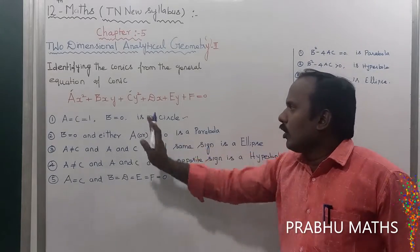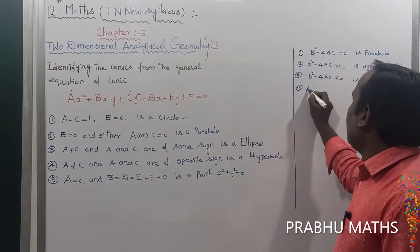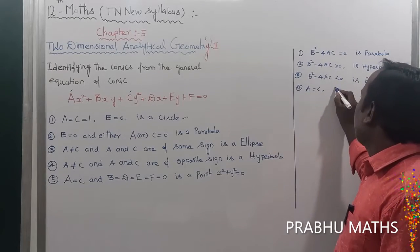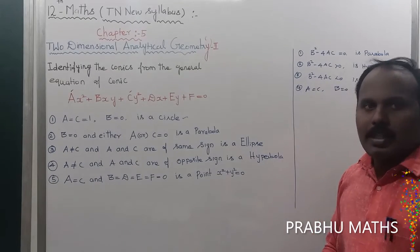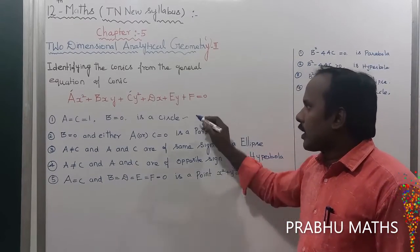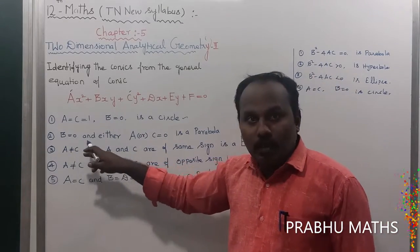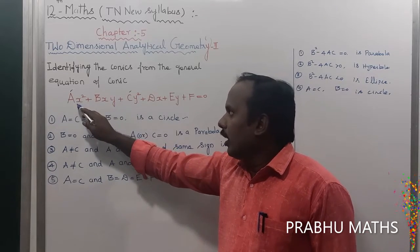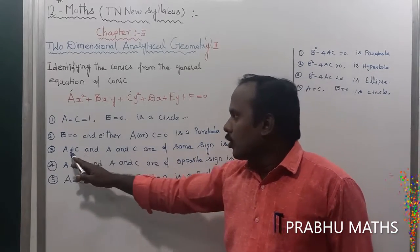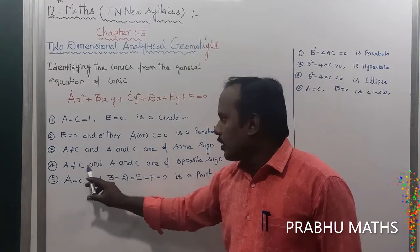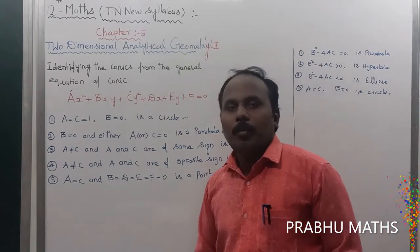Summary of identification: if b = 0 and a equals c, it is a circle. If b = 0 and either a or c equals 0, it is a parabola. If a and c have the same sign but a ≠ c, it is an ellipse. If a and c have opposite signs, it is a hyperbola. Otherwise, it is a point.